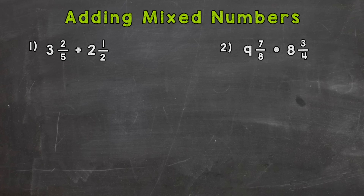As you can see, there are two problems on your screen that we're going to go through in order to get this concept down. So let's jump right in to number one: we have three and two-fifths plus two and a half.